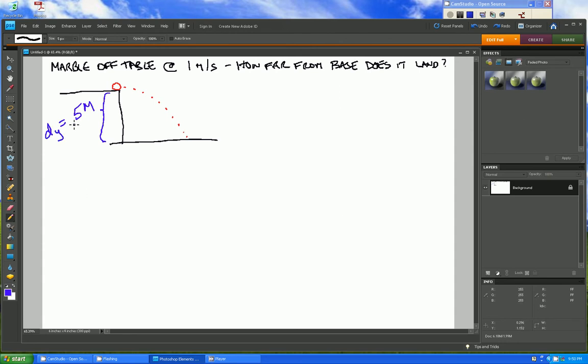We're going to call that negative because all our dimensions are taken from this point right here, the edge of the table. Going down from that point is negative, going to the right is positive.